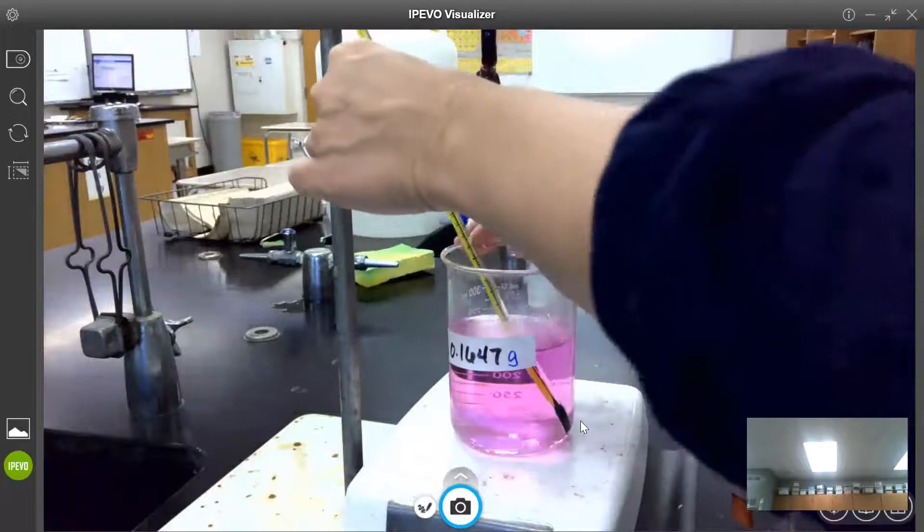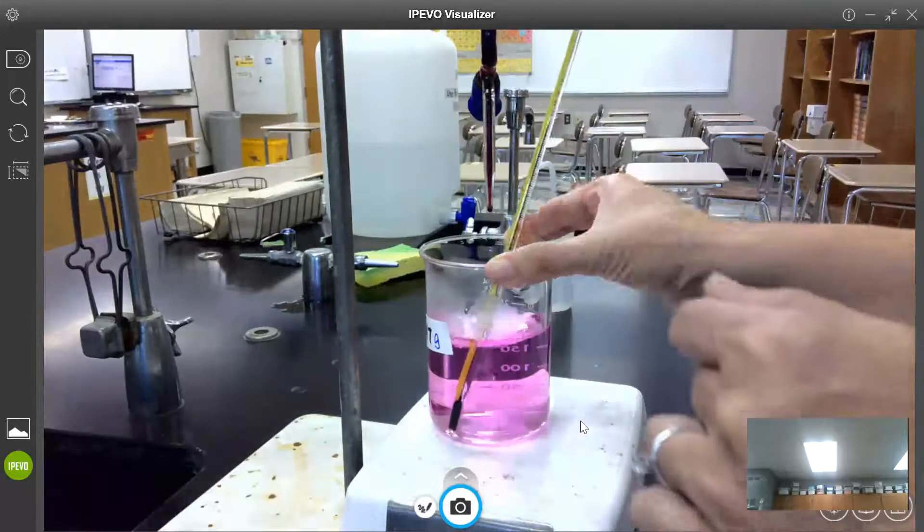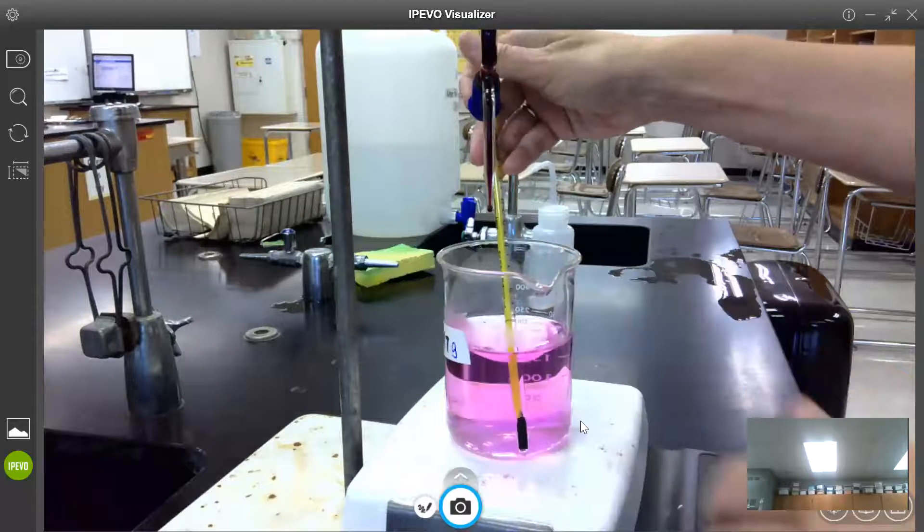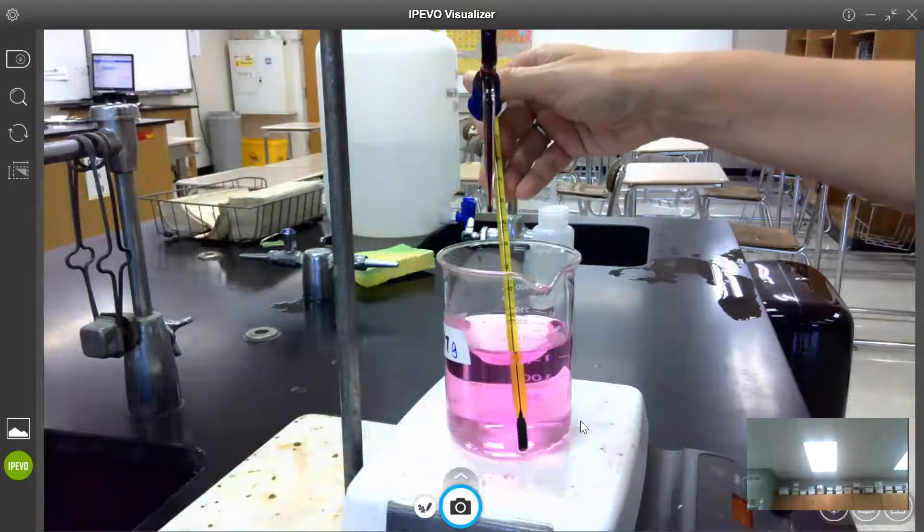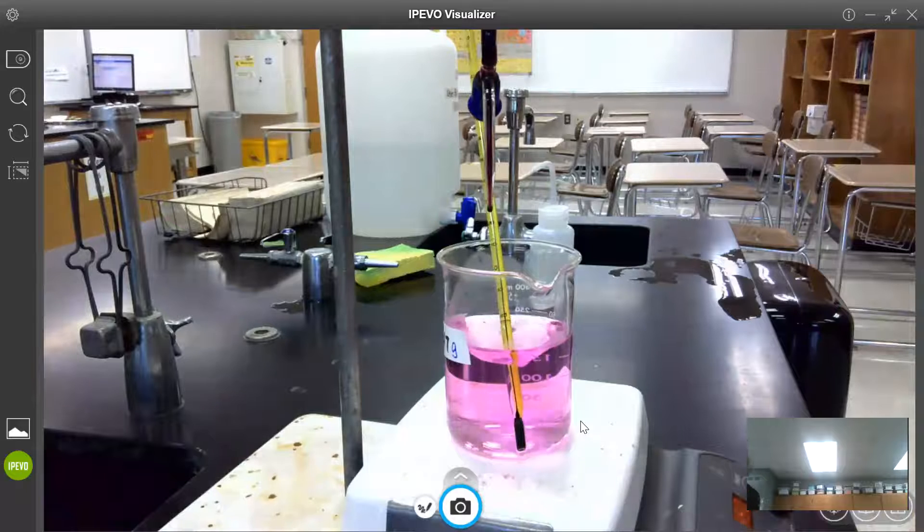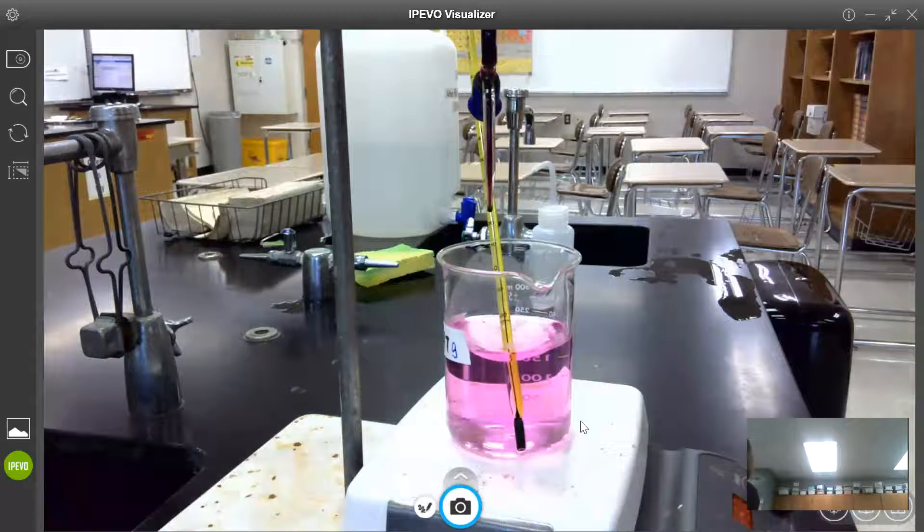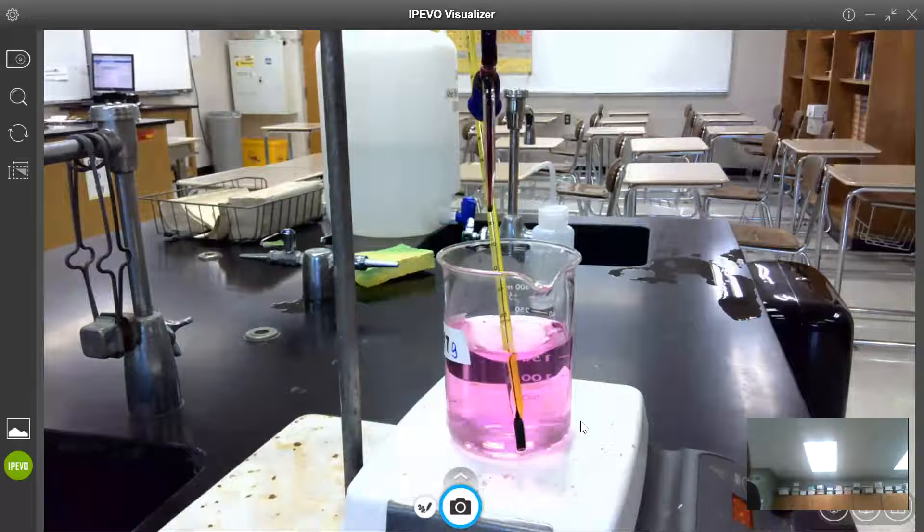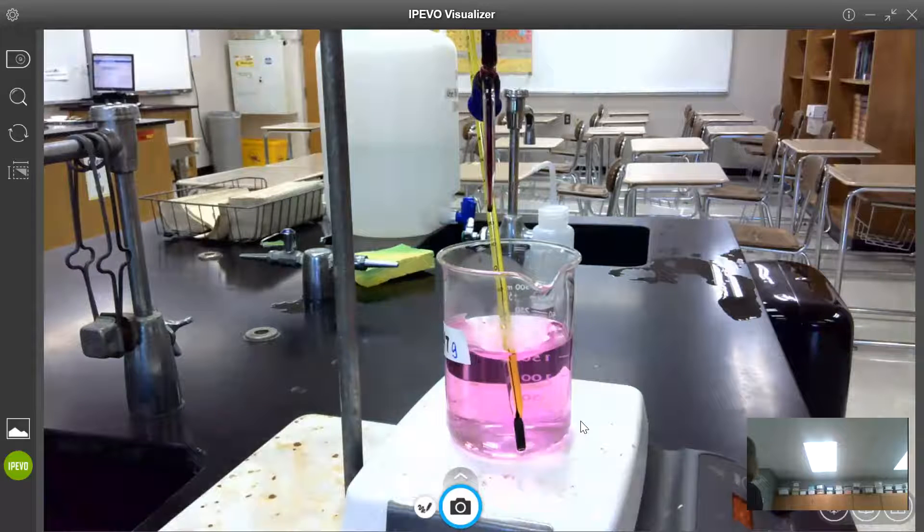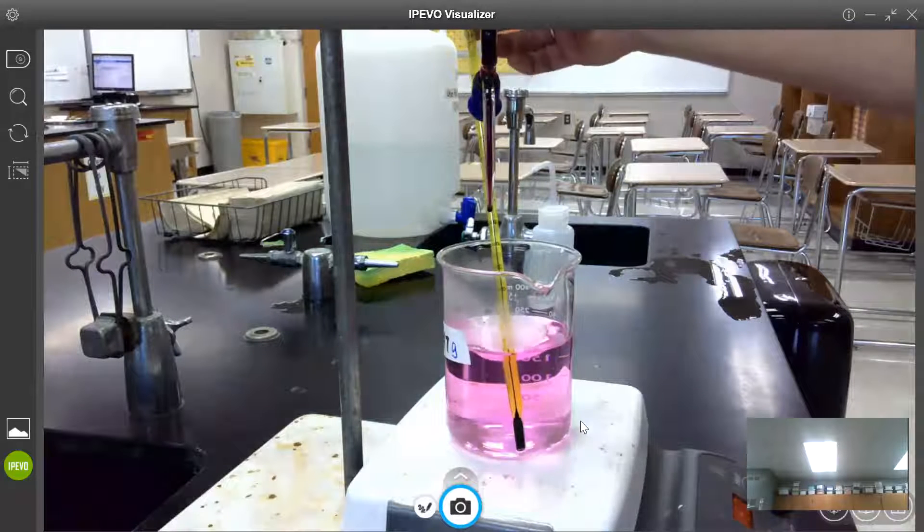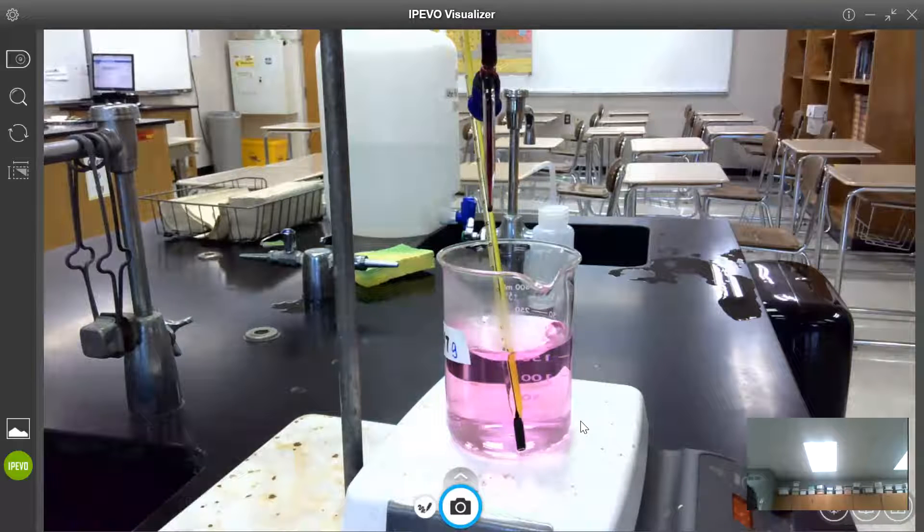All right and as it stirs we're going to see that color slowly dissipate as the KMnO4 reacts with the sodium oxalate. So you can see we're sort of going to colorless. So we're still stirring and we're still heating and right now the temperature is approaching 70 degrees.